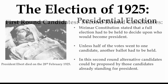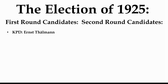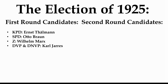So who were the first round candidates? For the KPD, the Communist Party of Germany, you have Ernst Thälmann. For the SPD, the Socialists, Otto Braun. For the Zentrum Partei, the centre Catholic religious party, Wilhelm Marx. For the DVP and the DNVP — that's right and the far right — Karl Liarres. For the NSDAP, Erich Ludendorff — and the NSDAP would later become known as the Nazi Party.